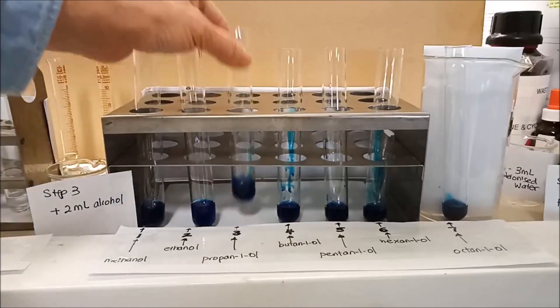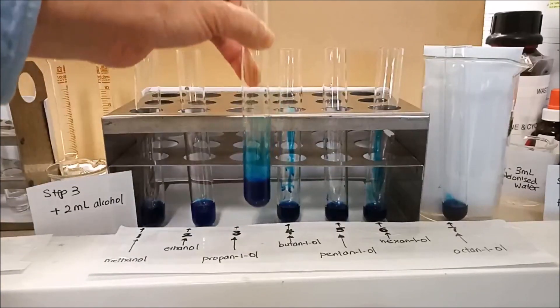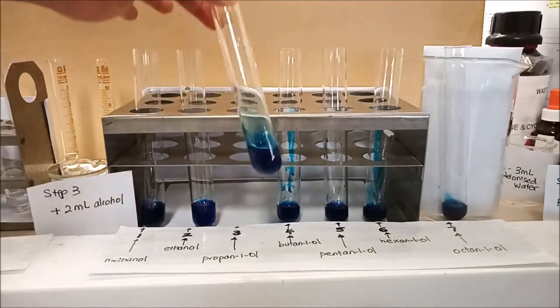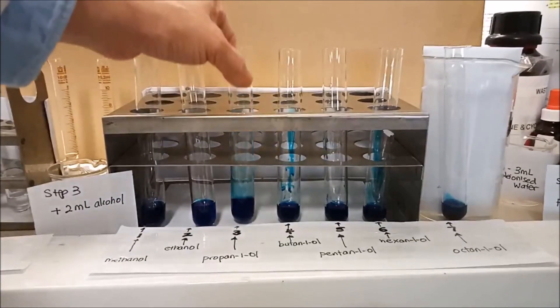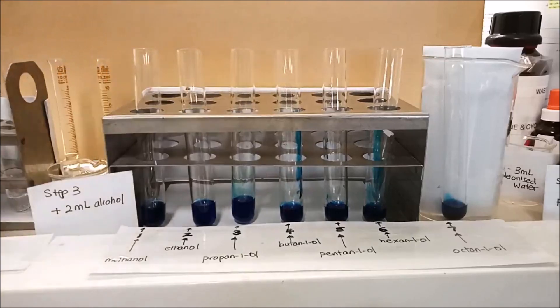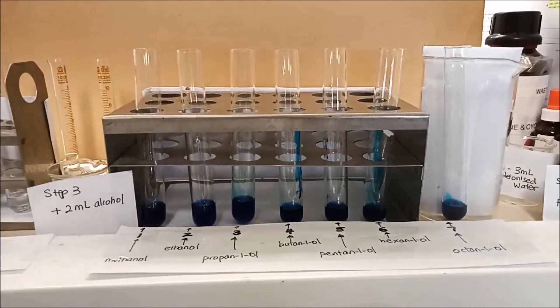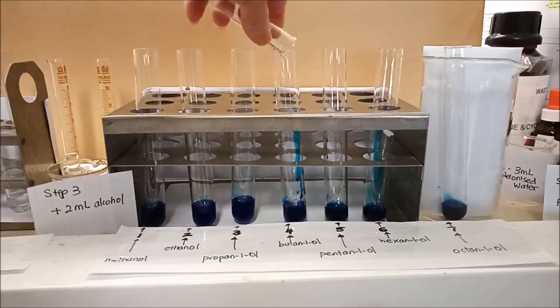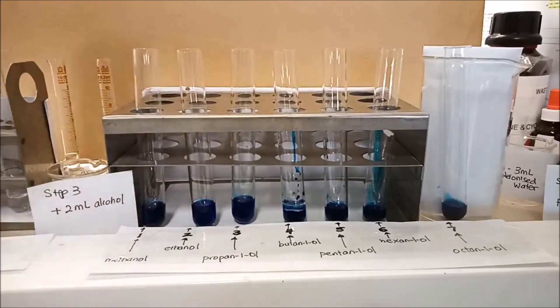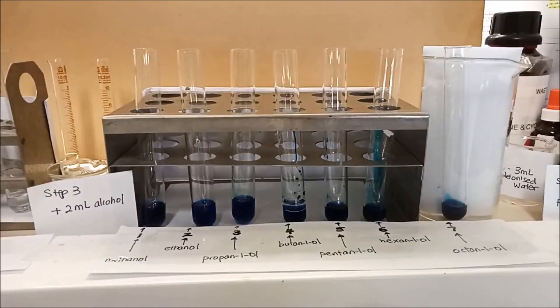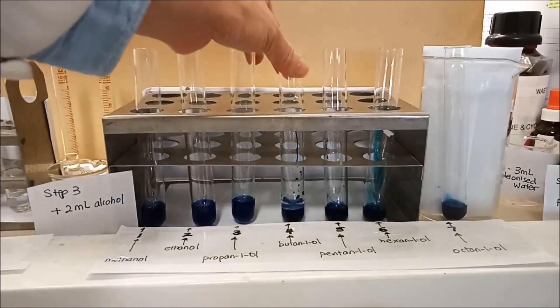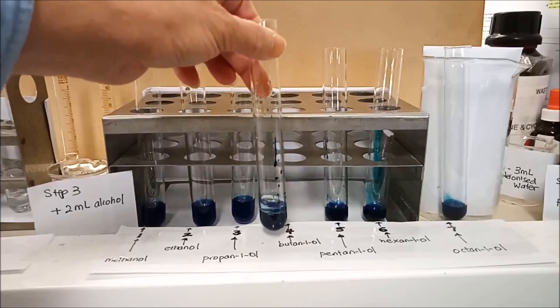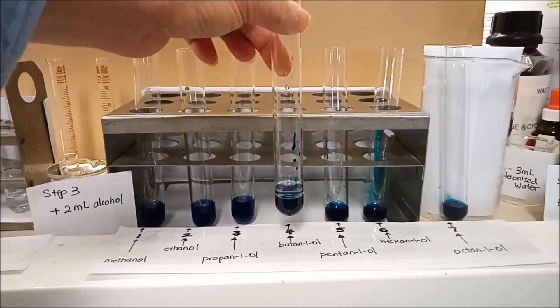So we have three mils of butanol. So we have three mils of water with two mils of butanol. Butanol is less... And let's see what happens here. You can see what happens here. You can see very clearly there are two different layers there.